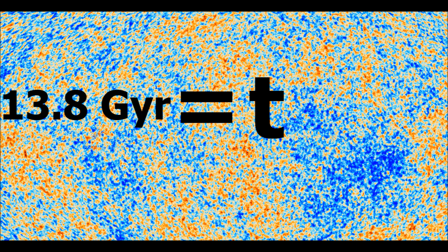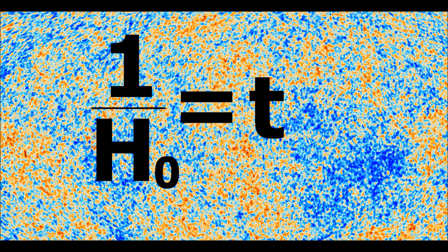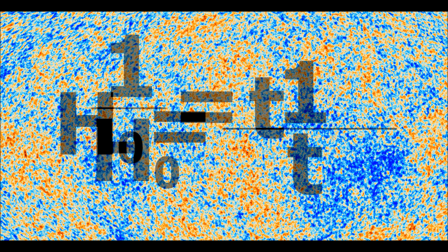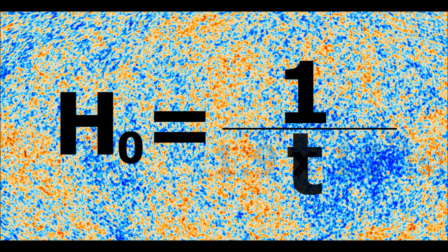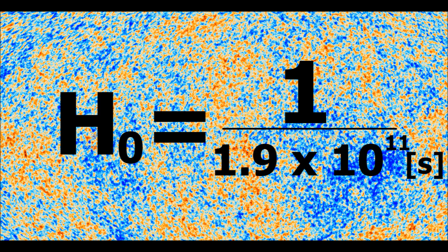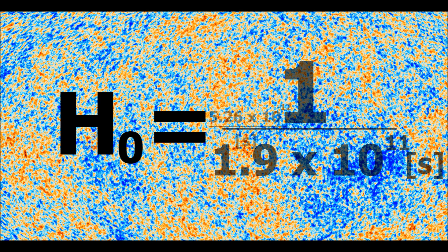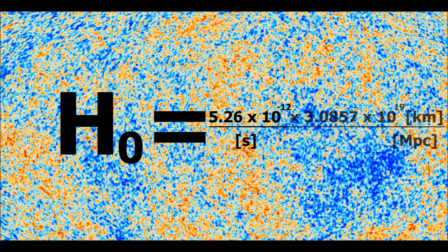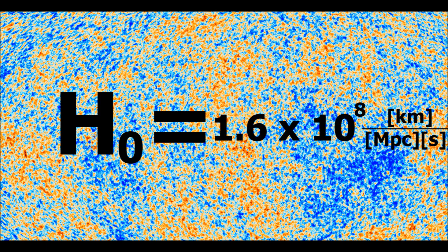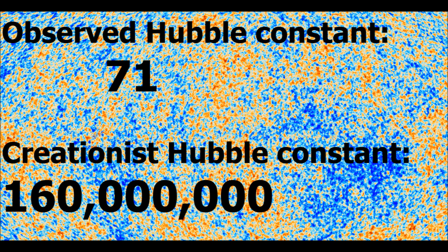Voila, we've just found the age of the universe. Just for fun, let's see what the value of the Hubble constant would have to be in order for the universe to be 6,000 years old. 6,000 years equals about 1.9 times 10 to the 11 seconds, whose inverse is 5.26 times 10 to the negative 12. Multiplying in 3.0857 times 10 to the 19 kilometers per megaparsec, we find that the creationist Hubble constant is about 160 million compared to the observed value of about 71. I'm just saying.